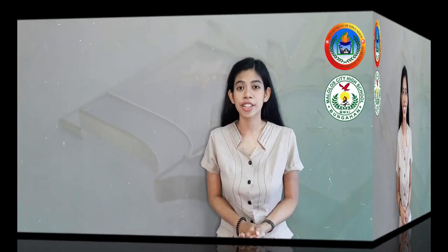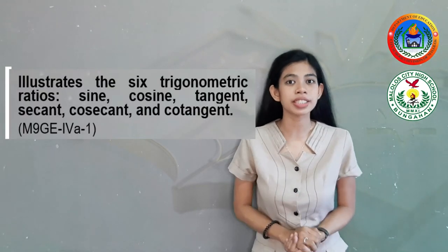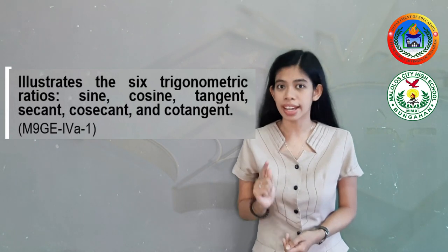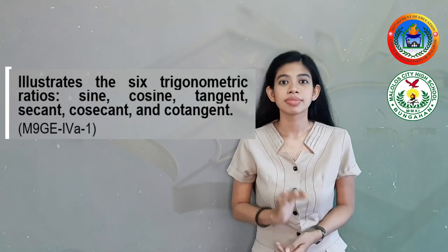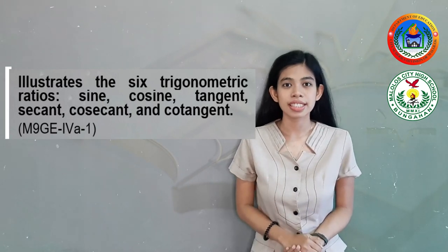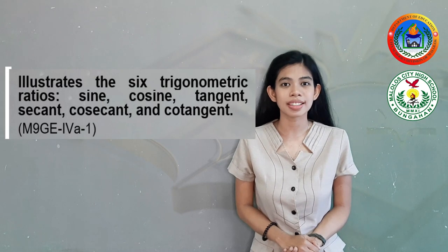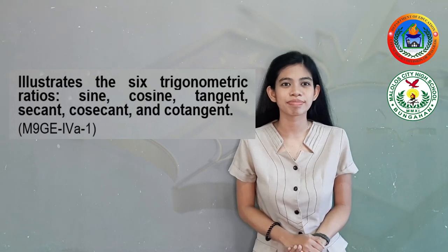In this video lesson, we will learn how to illustrate the six trigonometric ratios: sine, cosine, tangent, secant, cosecant, and cotangent. Also, we will be identifying the different parts of a right triangle, and we are going to apply the Pythagorean theorem in solving right triangles.